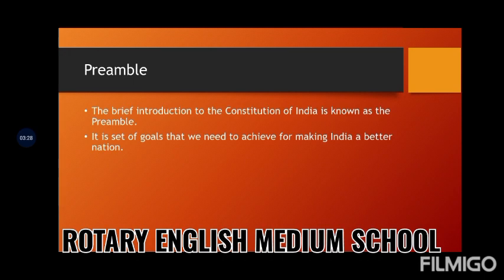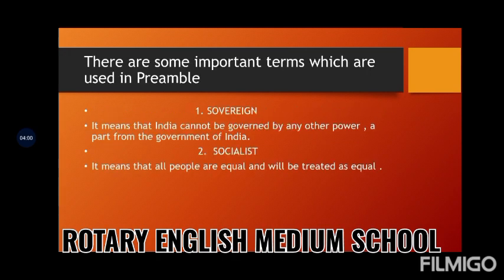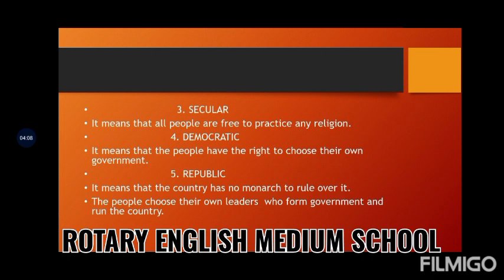I hope you have understood about the preamble. What is the purpose of the preamble? It is the set of goals that we need to achieve for making India a better nation. Next, we are going to see the five important terms which are used in the preamble: sovereign, socialist, secular, democratic, and republic.